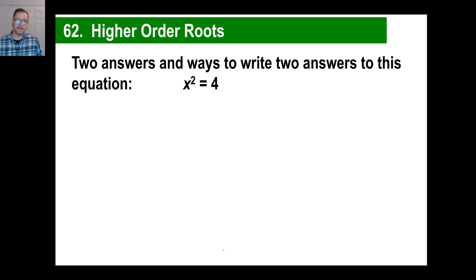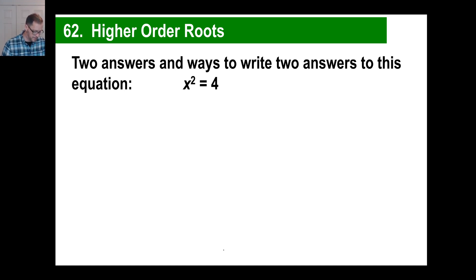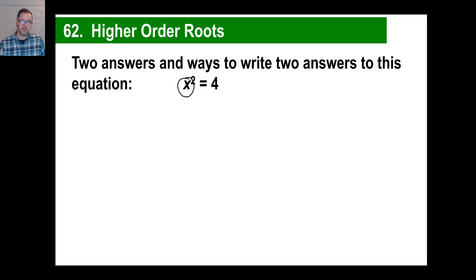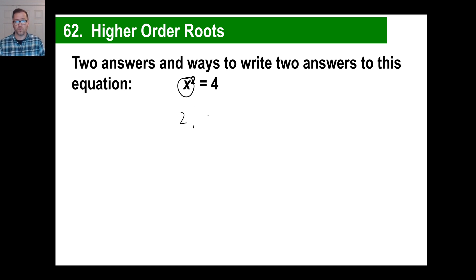Take a look at this — two answers and two ways to write them for this equation. x squared equals 4. What number squared gives you positive 4? The obvious answer is 2. But don't forget, negative 2 also works, because negative 2 times negative 2 is positive 4.